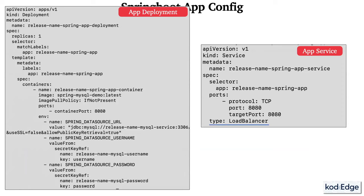First we'll create a Spring Boot project using Spring Initializer. Our project name will be spring-mysql-demo, the same name for the artifact. The build system will be Gradle, JDK version 17. We'll add dependencies: Spring Web for the REST API, Spring Data JPA for database operations, and MySQL Driver. Let's click Generate. Our project is generated — let me open it in IntelliJ.